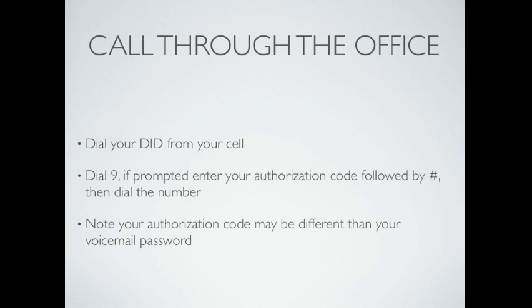If you need to call out through the office, dial your DID number from your cell, then dial 9. You may be prompted for an authorization code, which you'll enter followed by pound, then you can dial the phone number. Note that your authorization code may be different than your voicemail password.